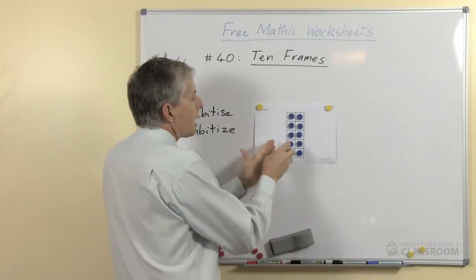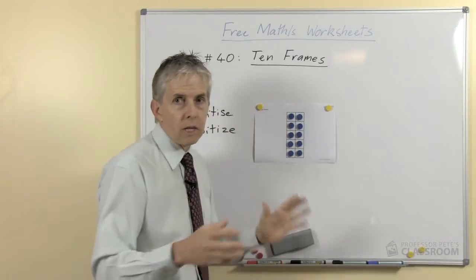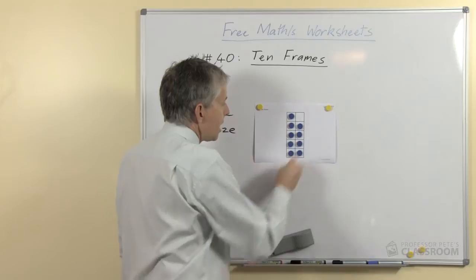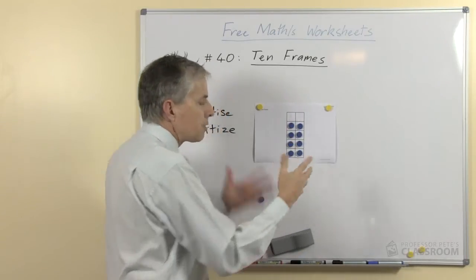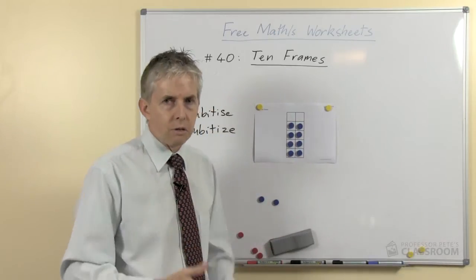They will quickly get used to the idea that when it's all full that's ten, and if you take one away that must be one less than ten, so that's nine. If we have two lines of four that's eight and so on.